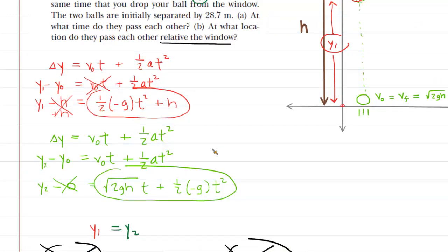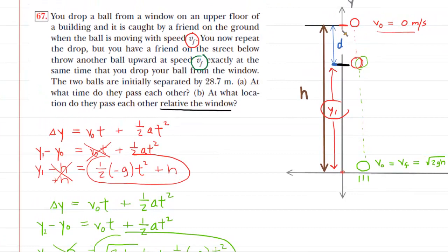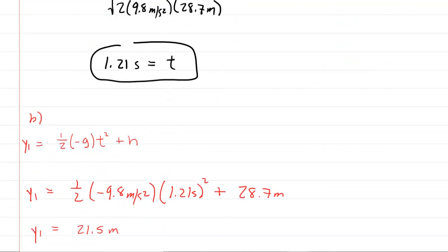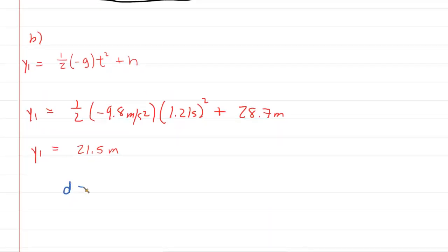But the question wanted relative to the window. So if you go back and look at the picture, we're looking for that distance D beneath which the ball has fallen. And that from the picture can be easily found by taking the height and subtracting y1. So in essence, we can say that D is equal to the height minus that y1. We would just take that height of 28.7 meters and subtract the 21.5 meters that we just figured out. And when you do that, you're going to get about 28.7 minus 21.5, about 7.2 meters. That would be the correct answer to part B.